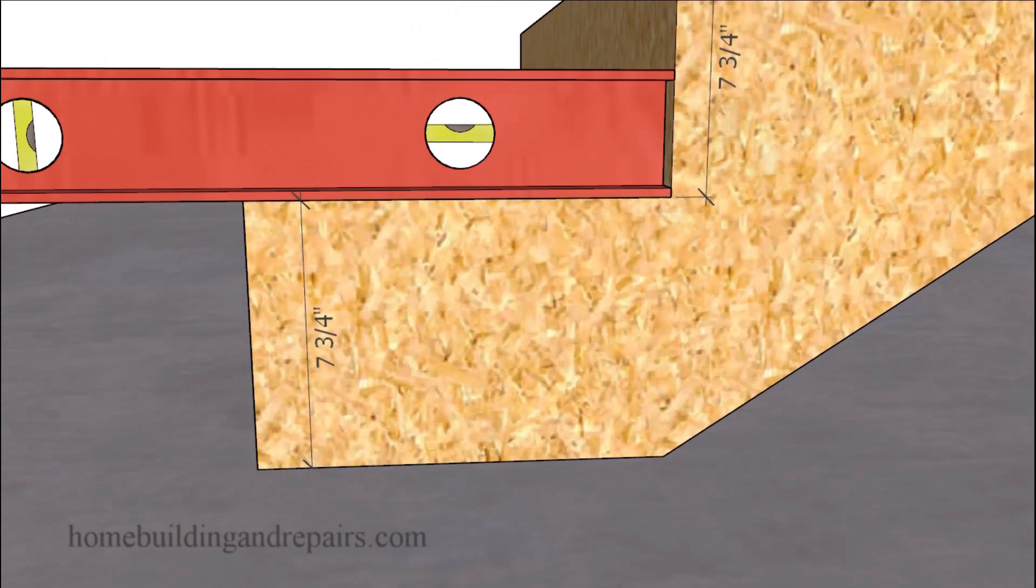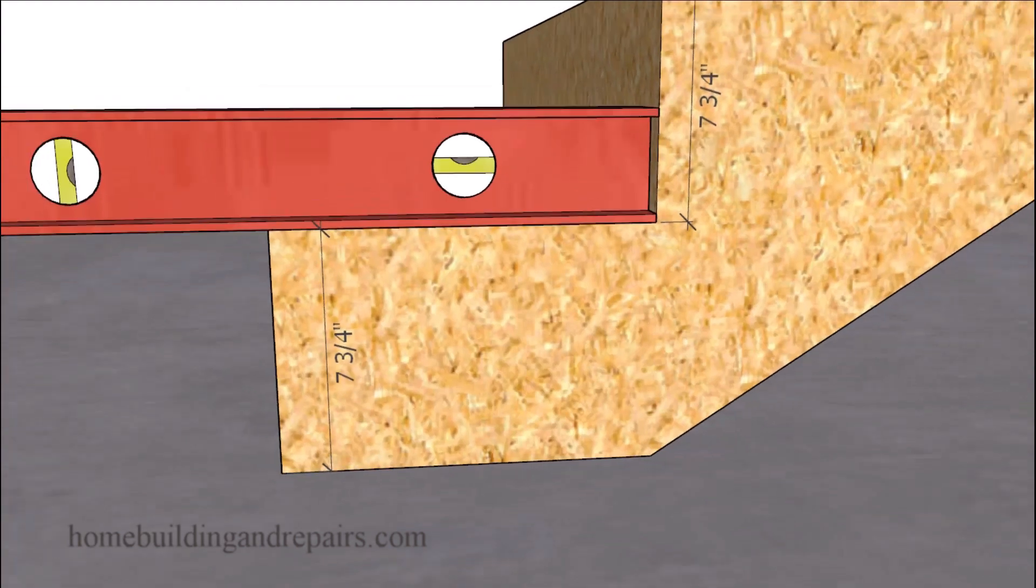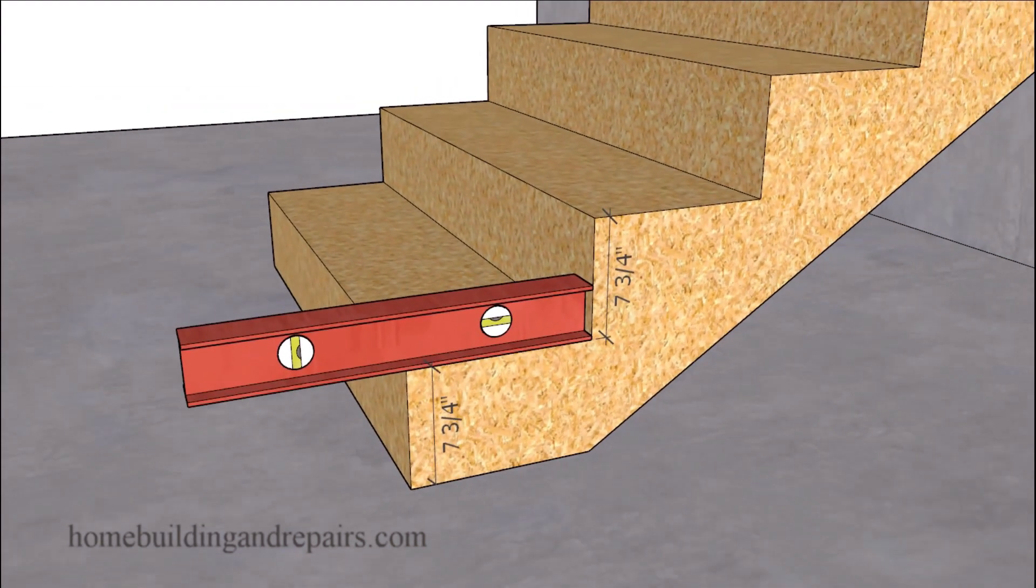So over here we have a seven and three quarter inch riser. This is the same stairway without the sloping tread. So if you measure this one you can actually measure the height of the riser, seven and three quarter inches, to get the individual riser height.